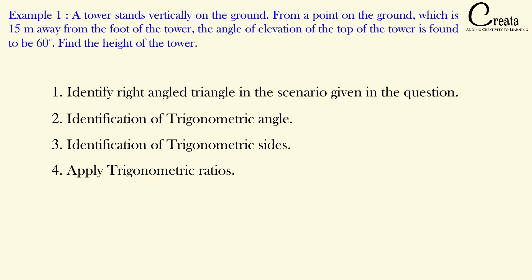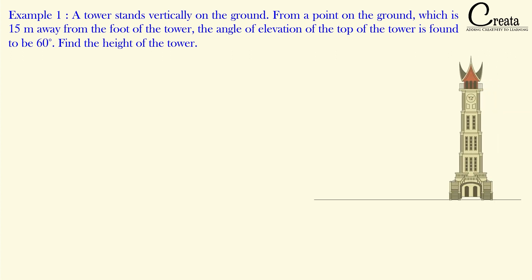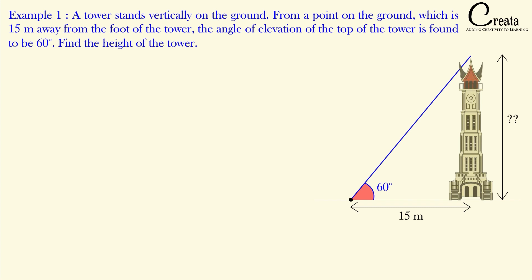We will go step by step. The first step is to make a right angle triangle out of the given scenario. Let's observe the question: a tower is given, vertical on the ground. A point is given on the ground 15 meters away from the tower. The angle of elevation from this point to the top of the tower is 60 degrees, as covered in the previous lecture. We have to find the height of the tower.